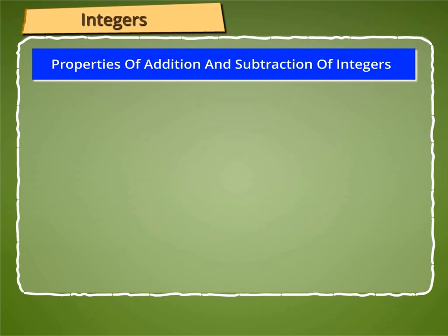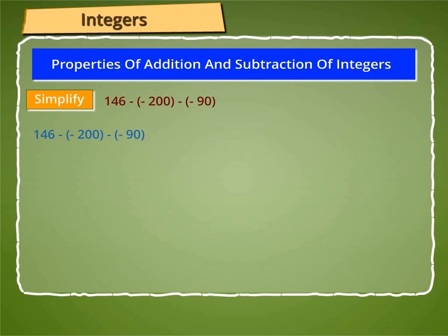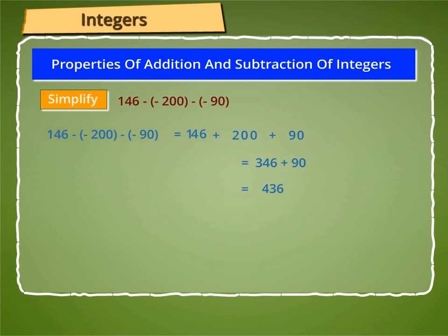Let us now learn simplification by means of an example. Let us simplify: 146 minus minus 200 minus minus 90. So, 146 minus minus 200 minus minus 90 is equal to 146 plus 200 plus 90. This gives us 346 plus 90, which equals 436. Thank you.